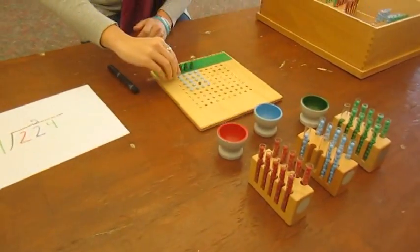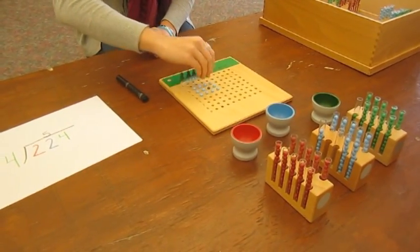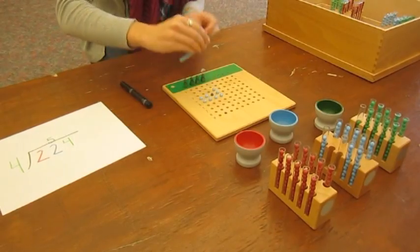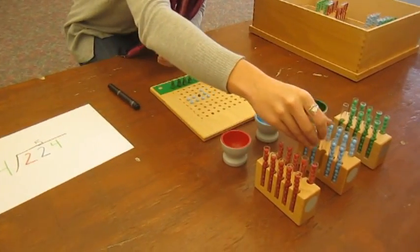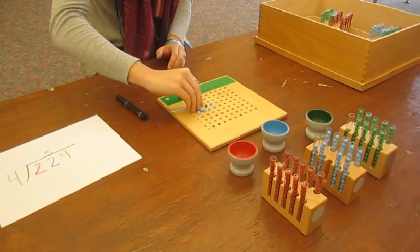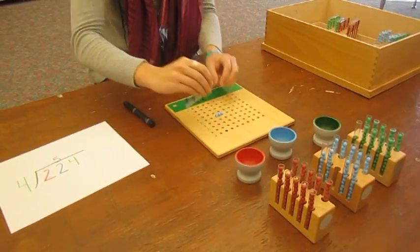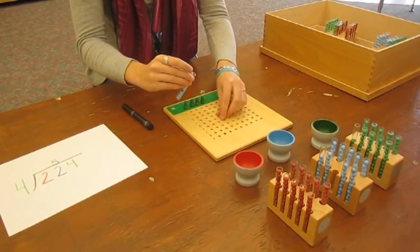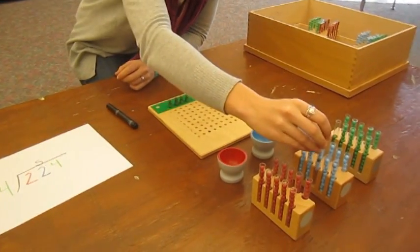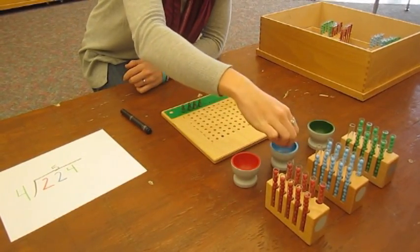Then we need to pick up our tens. Since we have two tens left we need to exchange them for wands.